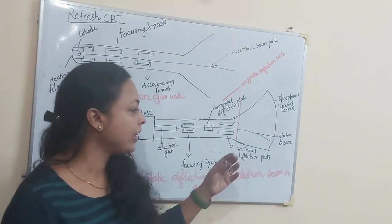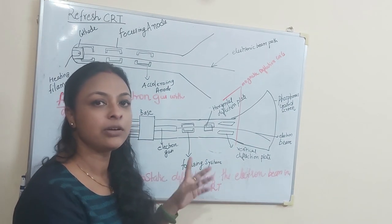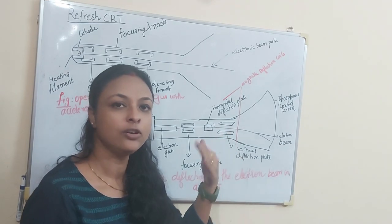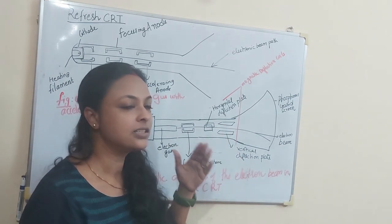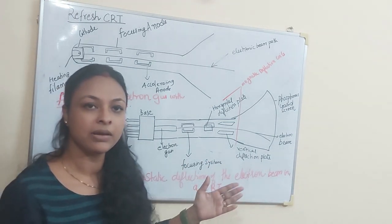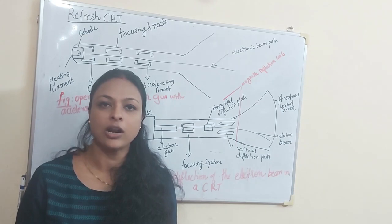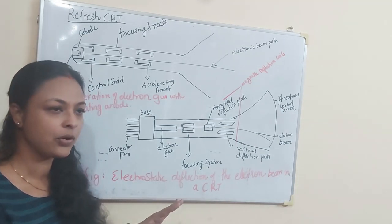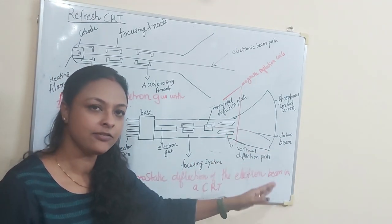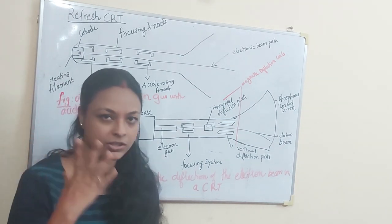Whenever you get a display, the display will start fading off. So when it starts fading off, the picture is repeatedly redrawn by electron beams. This is called refresh CRT. The frequency at which the picture is redrawn on the screen is called refresh rate.